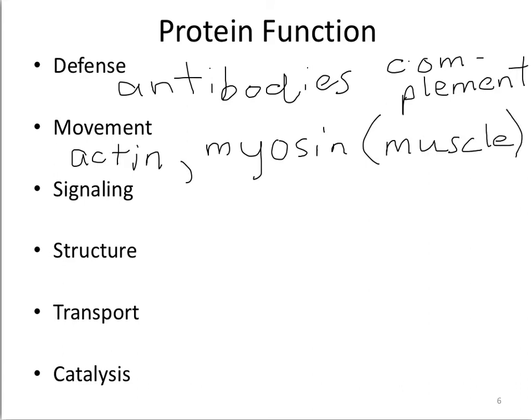A third role for proteins is signaling. In order to maintain homeostasis or for individual organisms like bacteria to live successfully, they need ways to communicate and respond to the environment. An example of a signaling protein is glucagon, which binds to receptor proteins on liver cells — a protein-protein interaction — triggering liver cells to release sugar when blood sugar is low, thereby maintaining homeostasis.